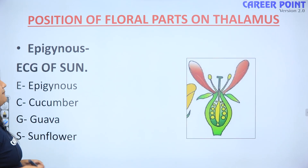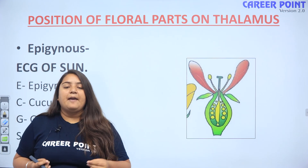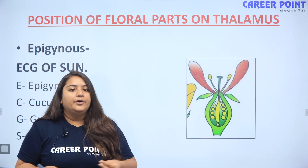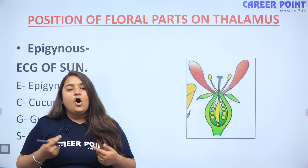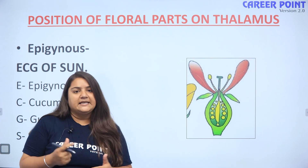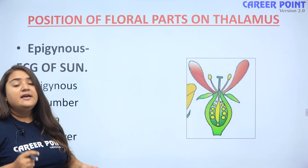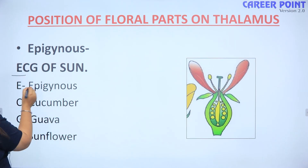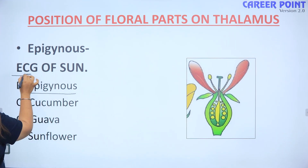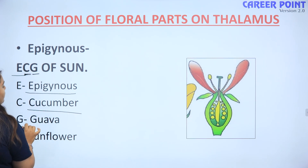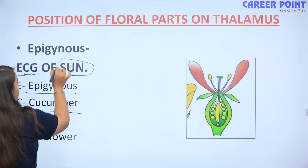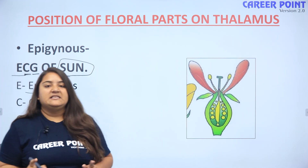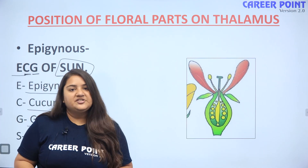Next, epigynous. Epigynous mein hum kaisi trick yad rakhenghe? Epigynous ki trick hai: 'ECG of sun.' ECG is a very common word, everyone should be aware of it. Aur hum ECG kis ka kara rahe hai? Sun ka. So E se kya hua? Epigynous. C se kya hua? Cucumber. G se kya hua? Guava. Aur sun se kya hua? Sunflower. ECG of sun — samajh aaya hai sabko?